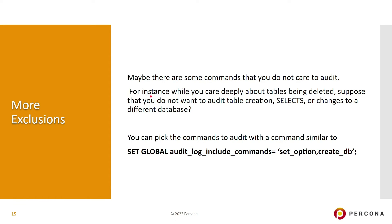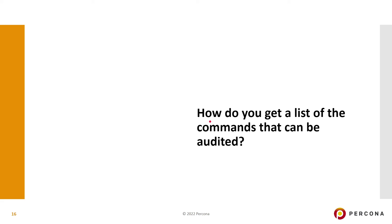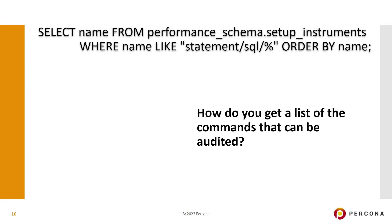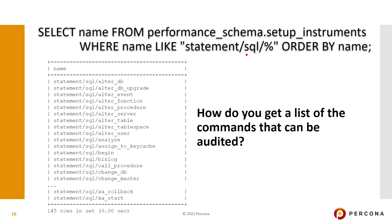For example, say you really care about tables being deleted but don't want to worry about table creation, selects, or USE statements for changing databases. You can pick specific commands to audit using a command like SET GLOBAL audit_log_include_commands. In this case we want to know when anyone sets an option or creates a database. To get a full list of auditable commands, query performance_schema.setup_instruments filtering for names starting with 'statement/sql' — depending on your release you'll get around 140 different options.